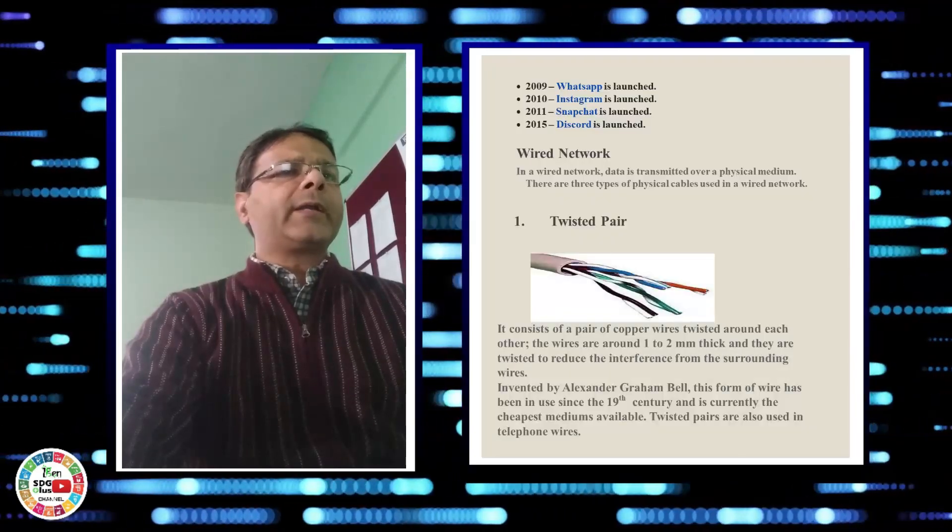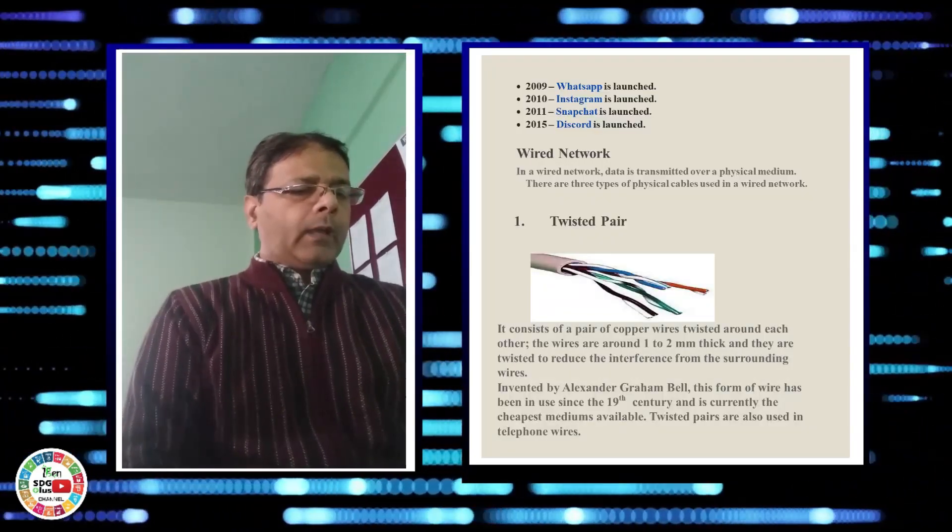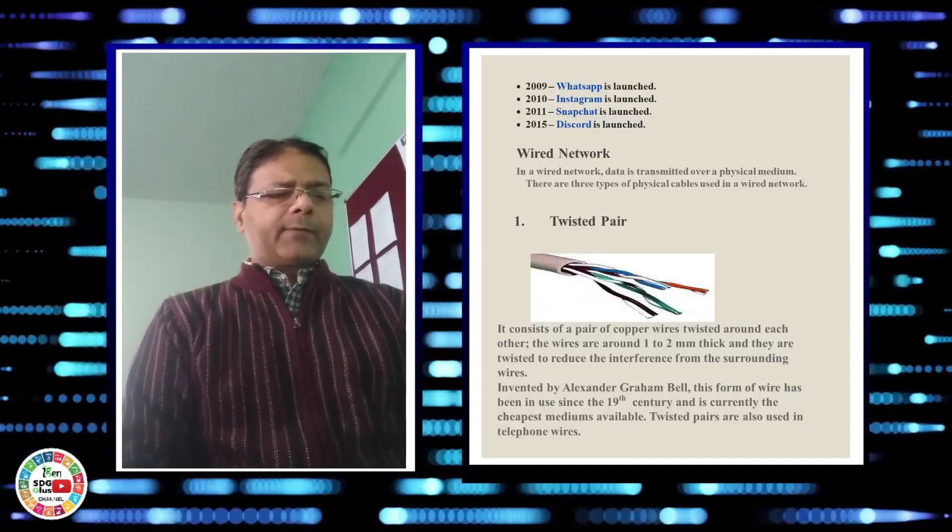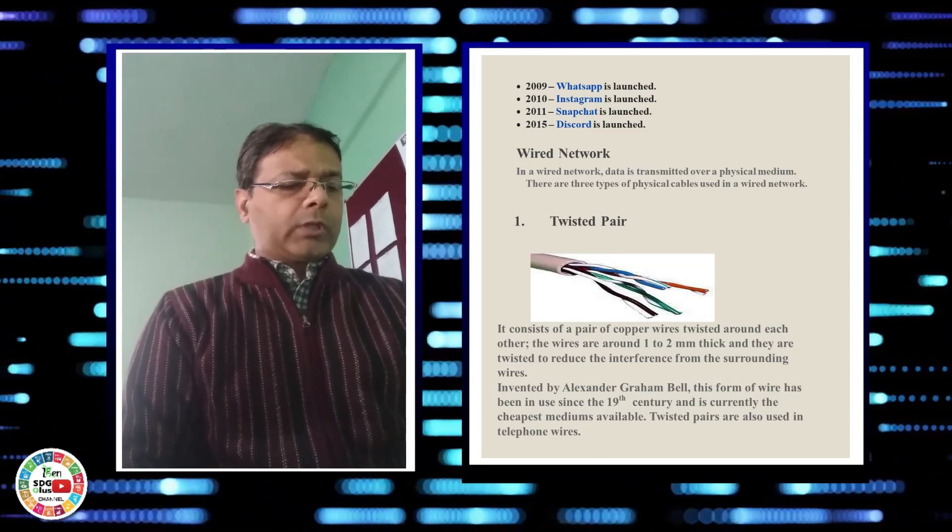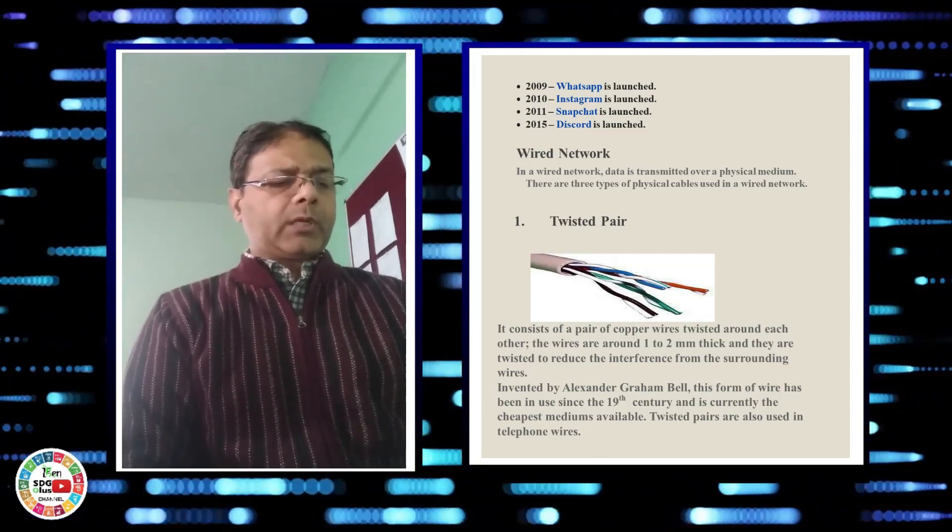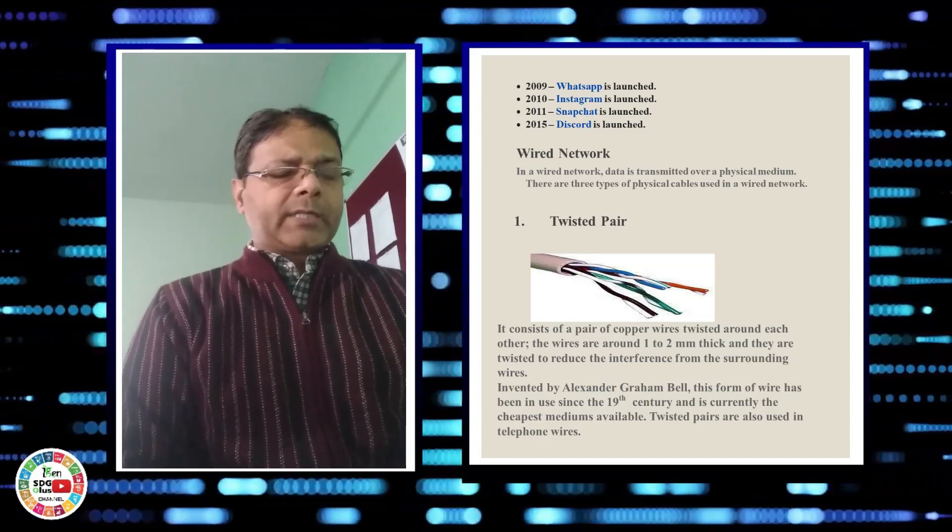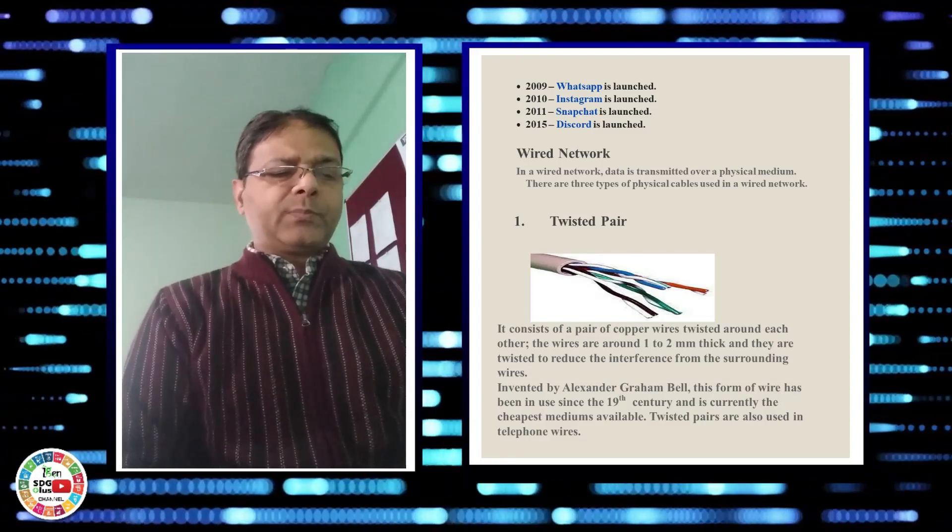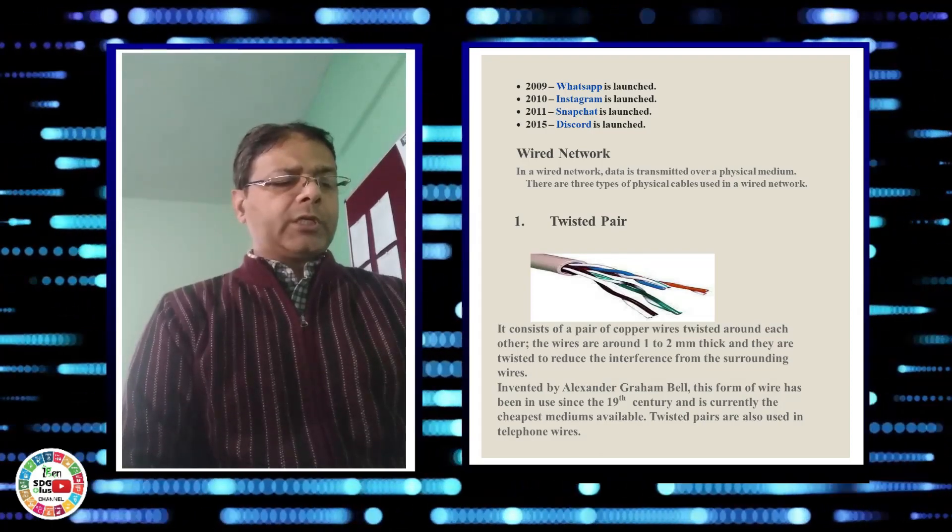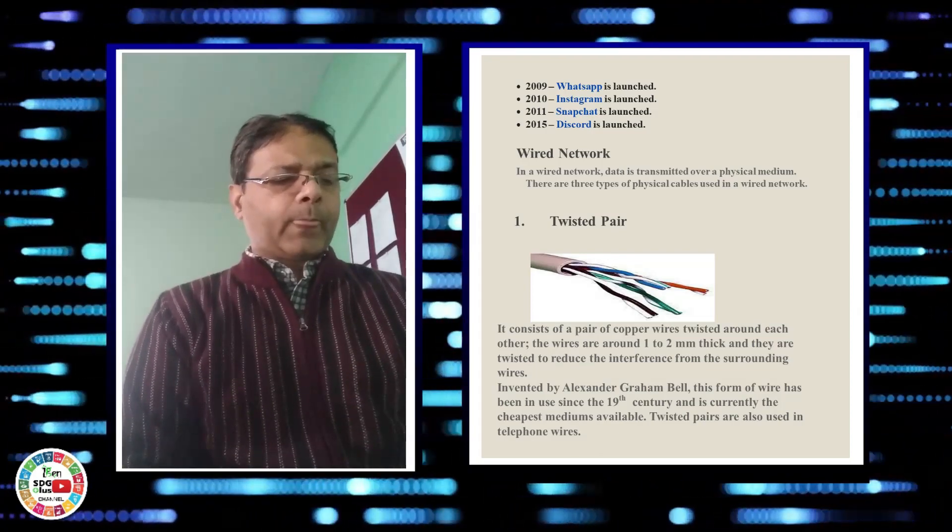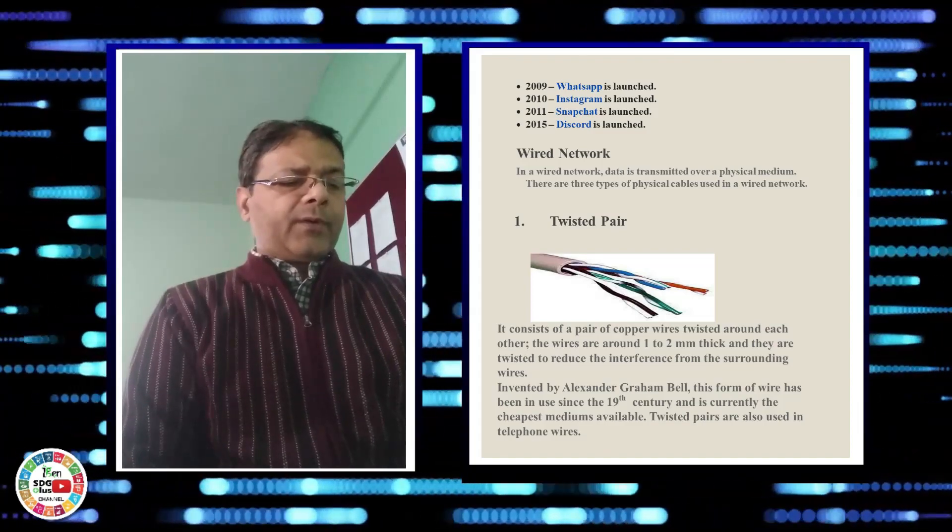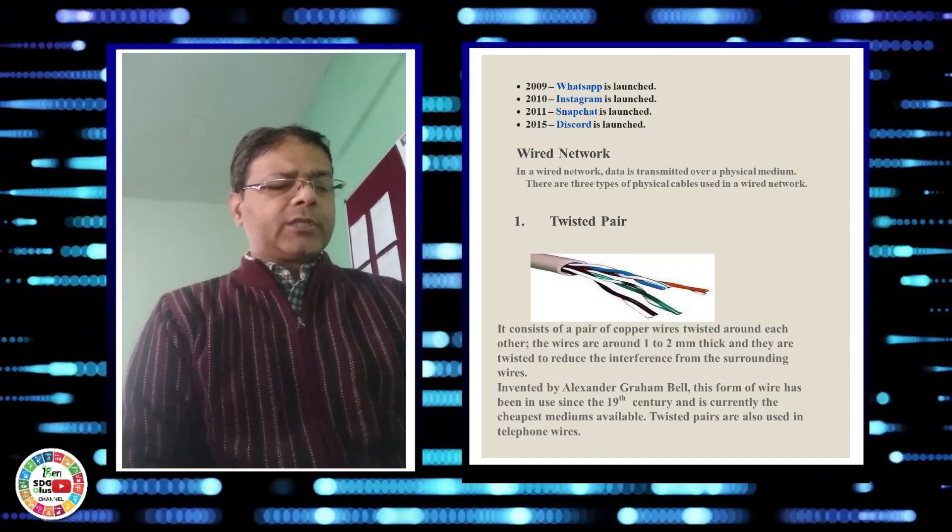Next comes wide network, but before telling you about wide network I would like to tell you about the components of communication system. In a communication system we have three components: first one is transmitter, second one is receiver, and third one is media or medium through which information transfers from one end to another end.